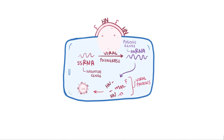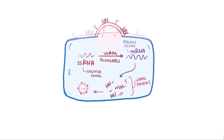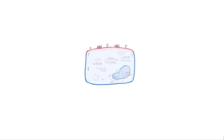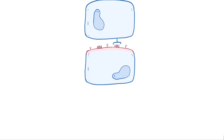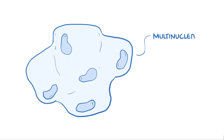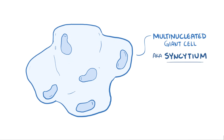What also ends up happening is that those HN and F proteins on the cell surface bind other cells — they actually end up binding epithelial cells to one another, which forms a clump of connected cells called a multinucleated giant cell, or a syncytium.